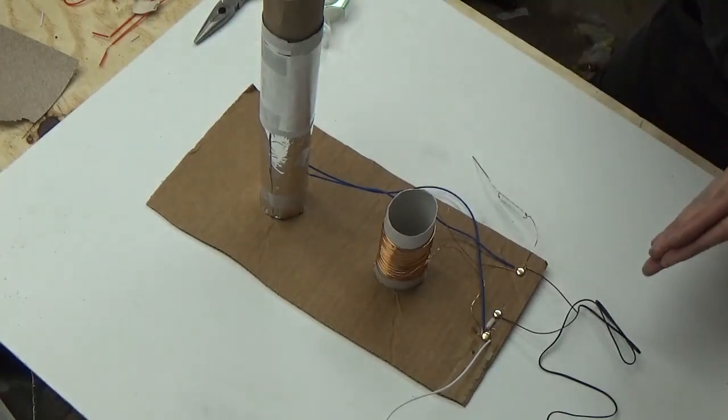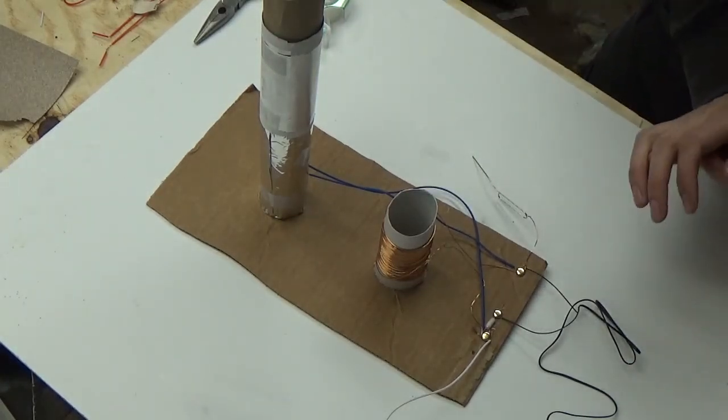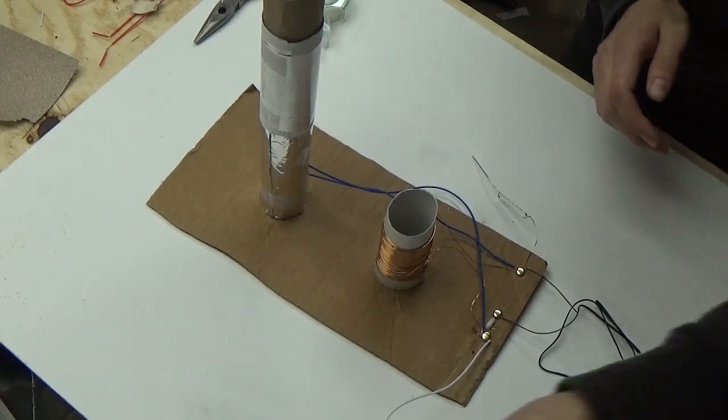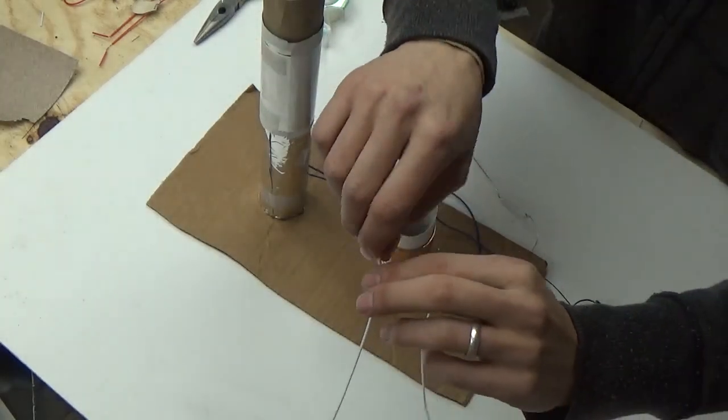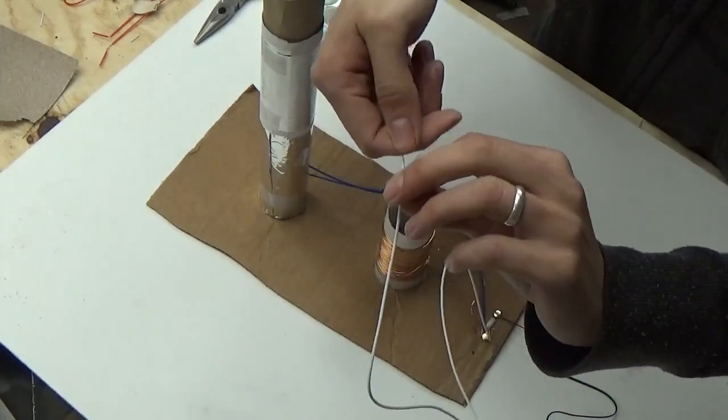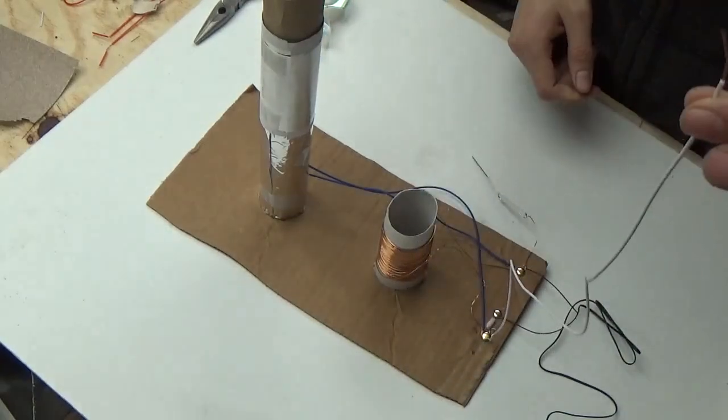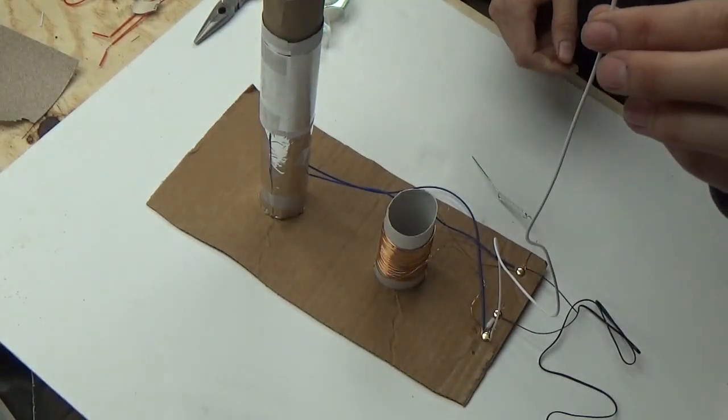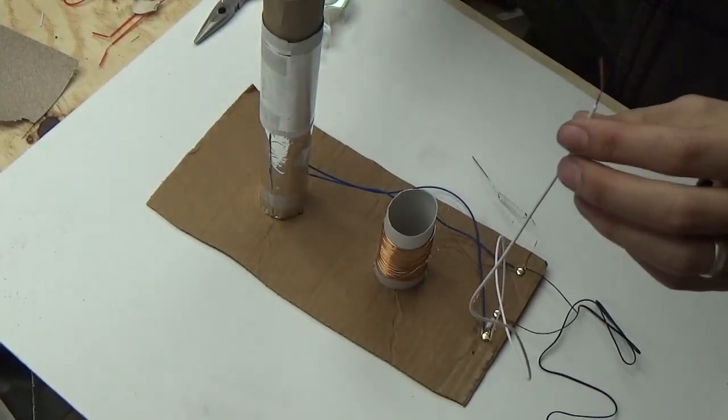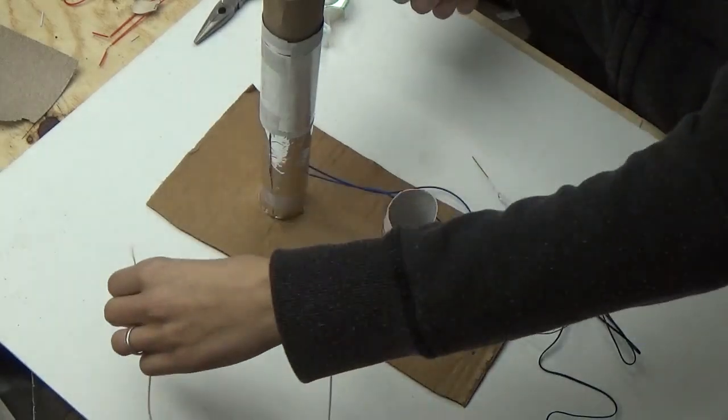We're actually pretty much done now. What you need to do is you're going to have this wire here at the end—it's going to be your antenna. You can either hold it if you live close to a radio tower or hook it up to a piece of metal. Let's see what happens.